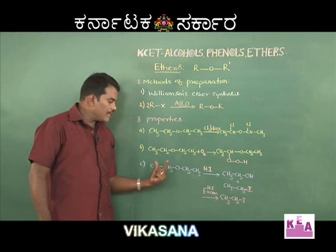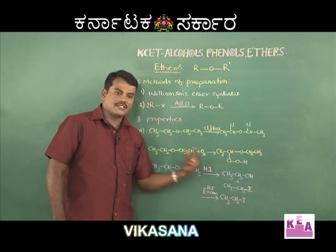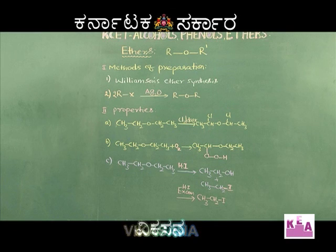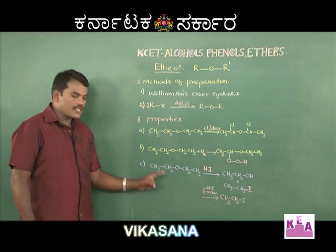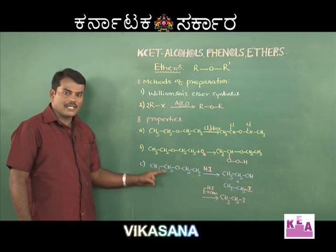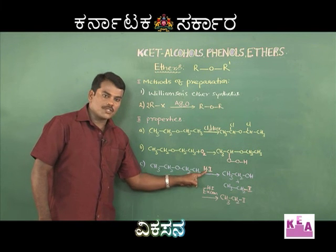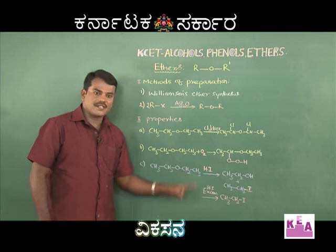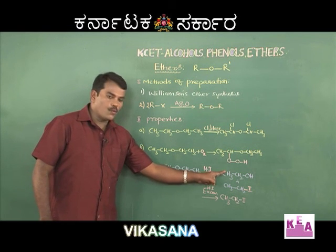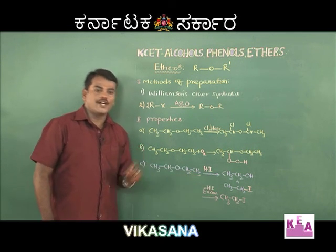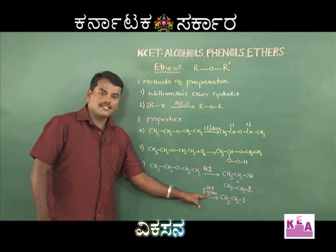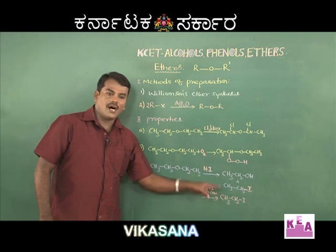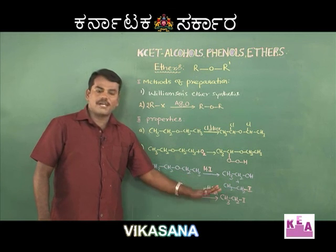The next most important property is ethers' reaction with hydrogen halide like hydrogen iodide. Ethers react with hydrogen iodide forming a mixture of alcohol and iodoalkane when a limited amount of hydrogen iodide is taken. If excess HI is taken, you get only iodoalkane or alkyl iodide — there is no formation of alcohol.